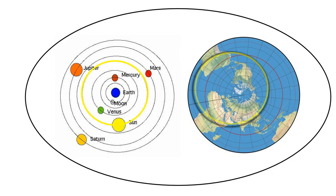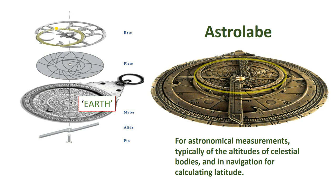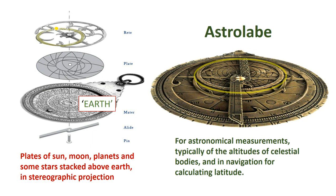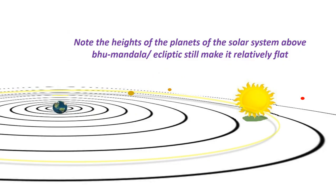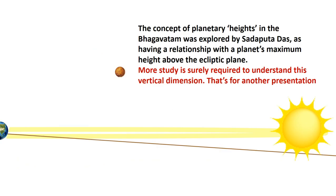Combining the planisphere and the solar system: let's look at an astrolabe, used for astronomical measurements — typically of the altitudes of celestial bodies — and navigation for calculating latitude. The plates of the sun, moon, planets, and some stars are stacked above the earth in stereographic projection. Note the heights of the planets of the solar system above Bhumandala, or the ecliptic, still make it relatively flat. The concepts of planetary heights in the Bhagavatam were explored by Sadaputadas as having a relationship with the planet's maximum height above the ecliptic plane. More study is surely required to understand this vertical dimension.